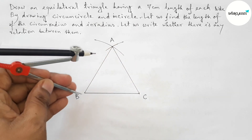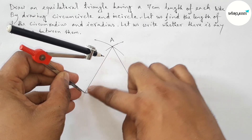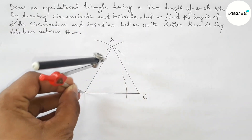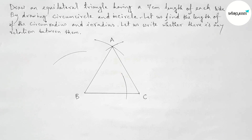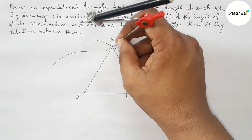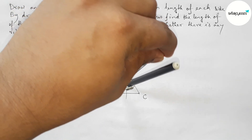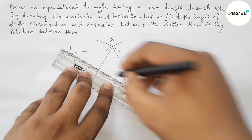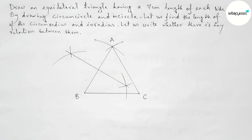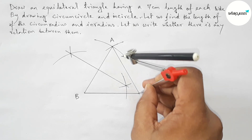Now bisecting line AB with the help of a compass. Putting the compass on point B, taking greater than half of AB, and drawing an arc. With the same length, putting the compass on point A and cutting arcs on both sides. Now joining this perpendicular bisector of line AB.